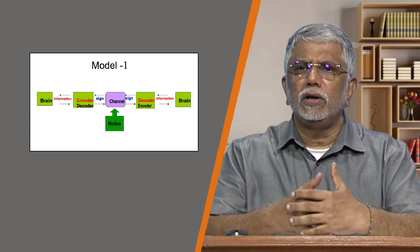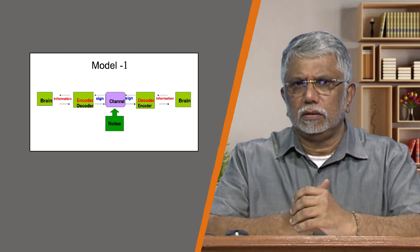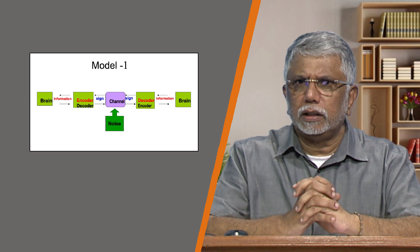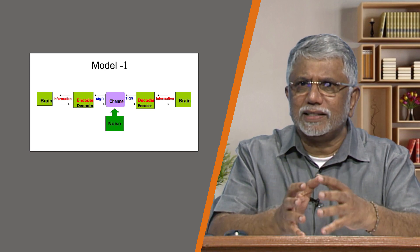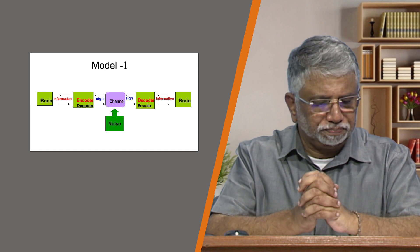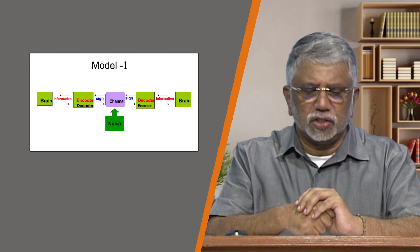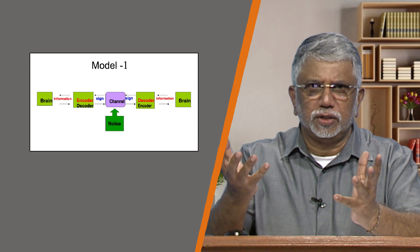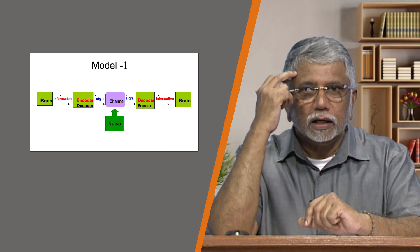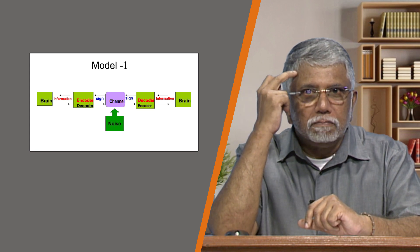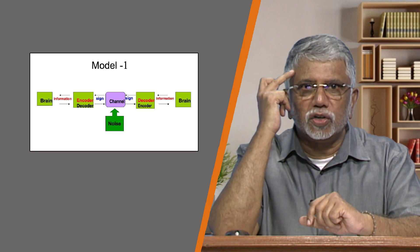This is one of the earlier models and perhaps the most common model, most often used to try and explain the process of interpersonal communication, and it does a fairly good job. The sender has thoughts, ideas, emotions, and information to transmit. These originate in the sender's brain — the sender is one of the interlocutors.